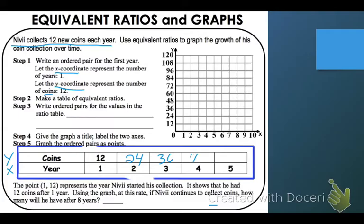12, 24, 36, 48, and 60. So that would be our equivalent ratio table. You could have used proportions if you needed to. However, that one was pretty easy.